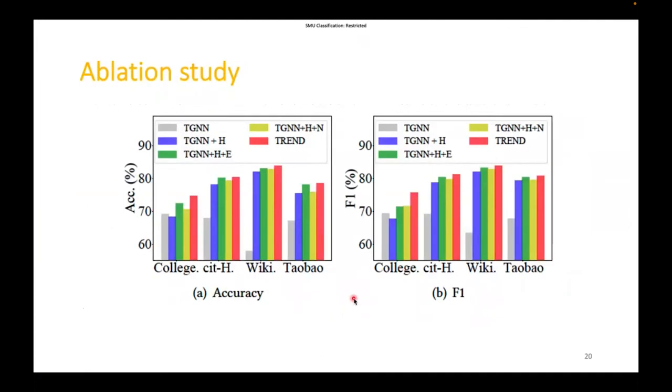To understand the contribution of each component in our TREND, we study the following ablated models on the task of temporal link prediction. First one is called TGN, which only takes two temporal GNN layers and optimizes the inner product of node-pairs. Second, TGN plus H, which adds the global transfer function for the Hawkes process to GNN. And then TGN plus H plus E and TGN plus H plus N, which further model the event and node dynamics on top of TGN plus H respectively. Note that TGN plus H plus E uses the event-specific transfer function. As shown in the figure, the performance generally increases when we gradually add more components to TGN. This shows that every component is useful for modeling temporal graphs.